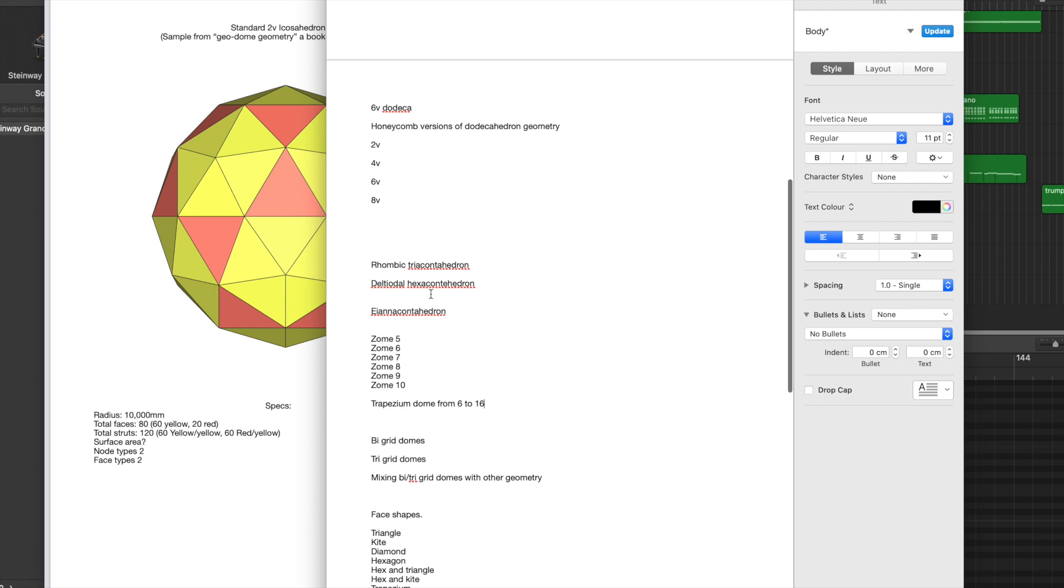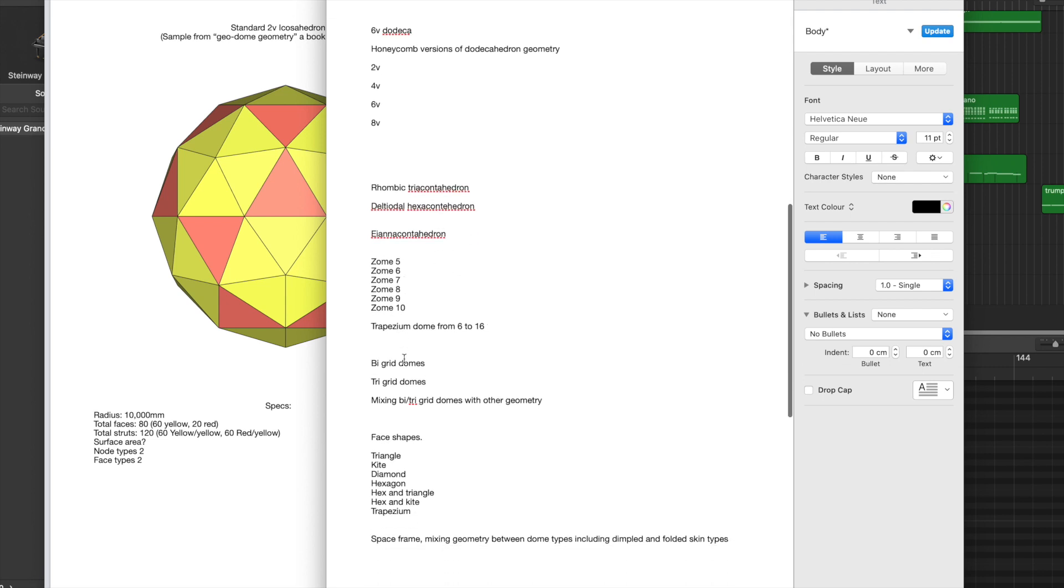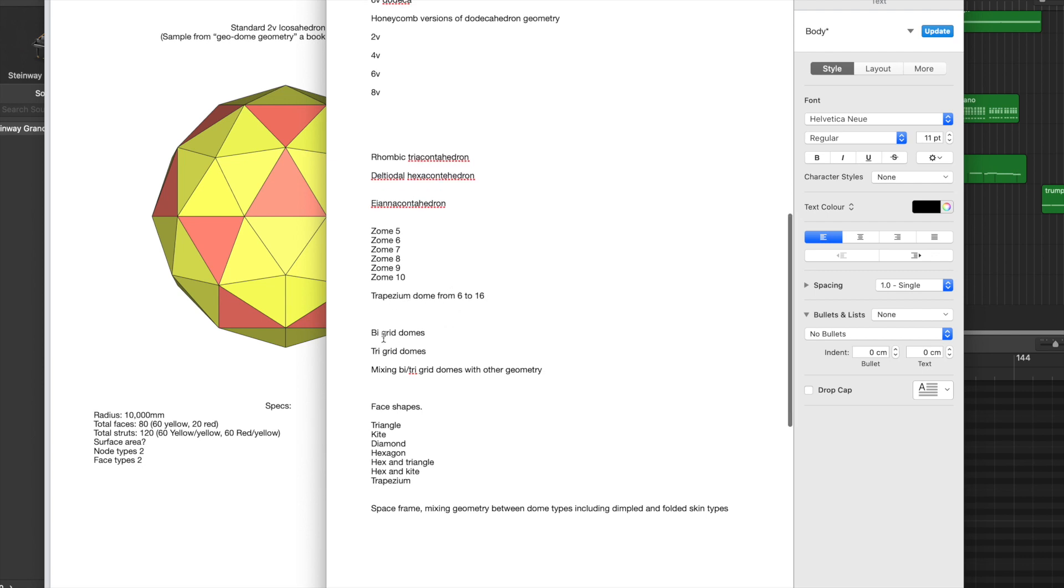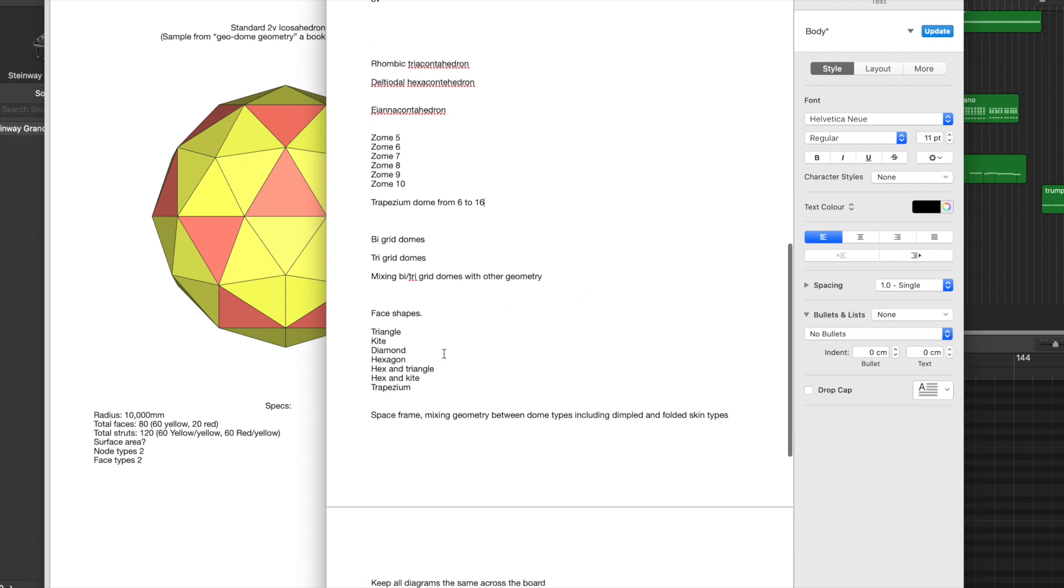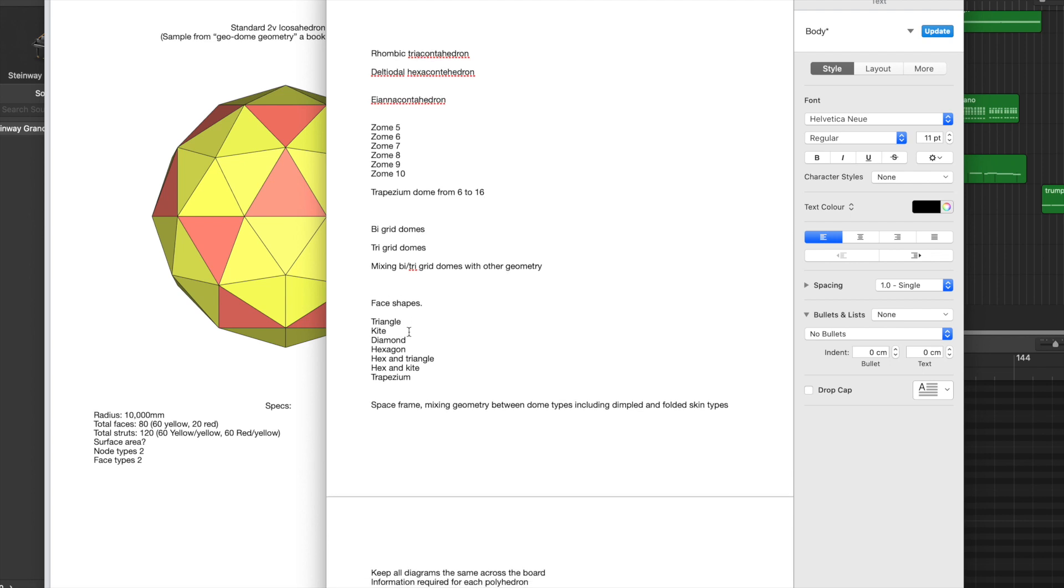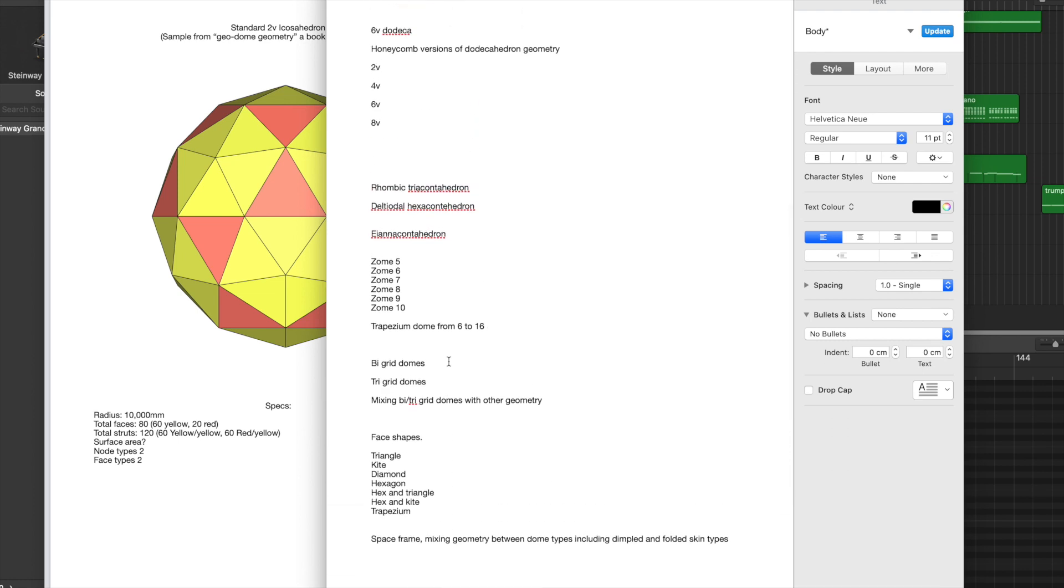We'd also do some other basic ones like tricontahedron, deltoidal hexecontahedron, enneacontahedron—they're quite good as well. A number of zones, trapezium domes using the bi-grid method and the tri-grid method. I do have videos on them if you're not sure what that is, and some mixtures with different face shapes.